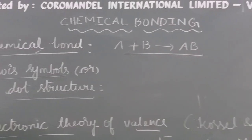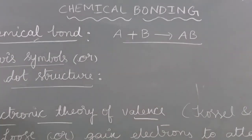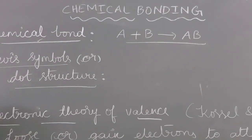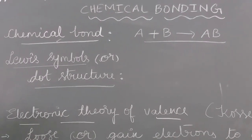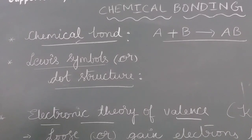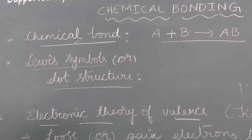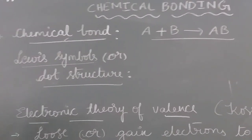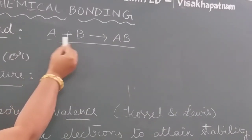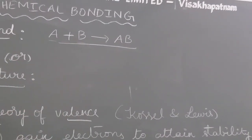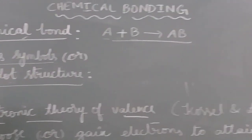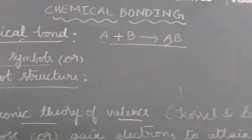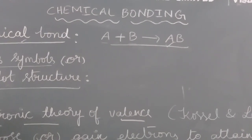First we are learning what is a chemical bond. The force of attraction between two atoms or more than two atoms to form a molecule is called a chemical bond. Suppose take this example: two atoms A and B. There is a force of attraction between these two atoms to form the molecule. This force of attraction is called a chemical bond.